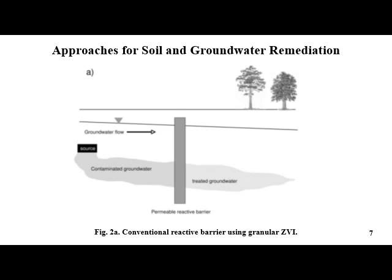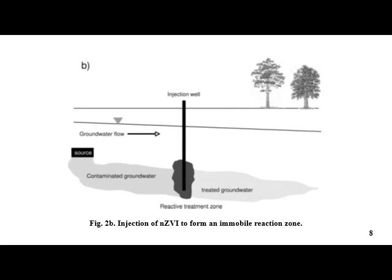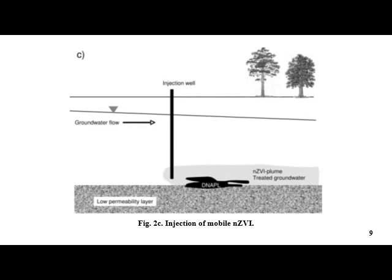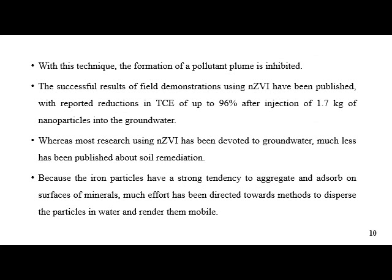As shown in figure 2a, two possible techniques use nanoscale zero valent iron. In the first technique, immobile nanoscale zero valent iron is injected to form a zone of iron particles adsorbed on the aquifer solids, as shown in figure 2b. In the second technique, mobile nanoscale zero valent iron is injected to form a plume of reactive iron particles that destroy any organic contaminant dissolving from a dense non-aqueous phase liquid (DNAPL) source in the aquifer, as shown in figure 2c, thereby inhibiting the formation of a pollutant plume.